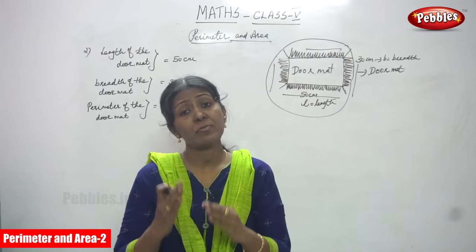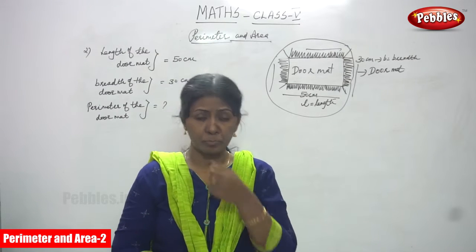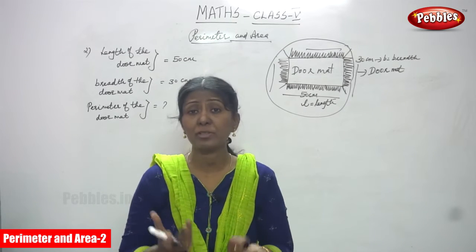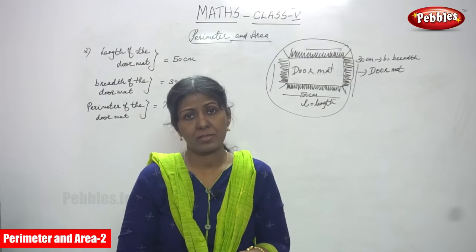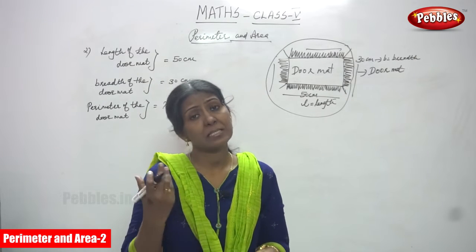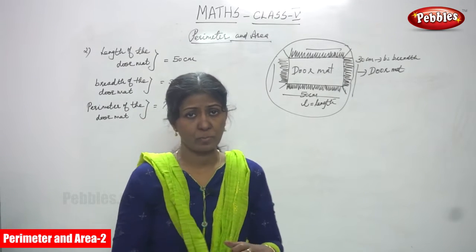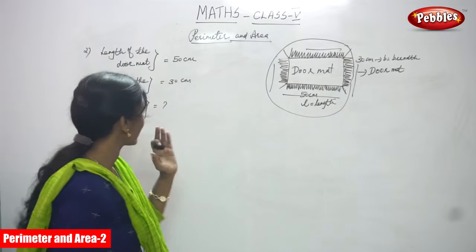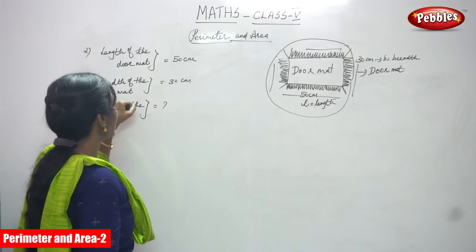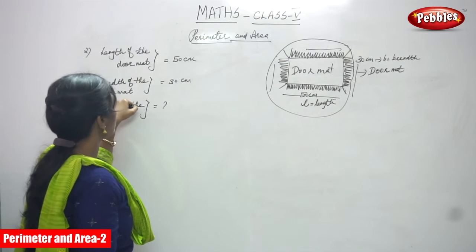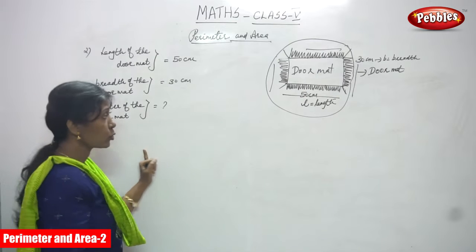First we have to find out what kind of shape it is. The doormat is in a rectangle shape — not rectangular, rectangle shape. So the length of the doormat is 50 cm and the breadth of the doormat is 30 cm. Perimeter of the doormat.